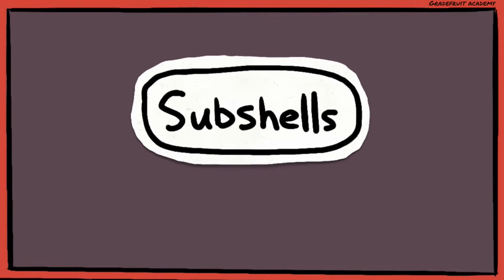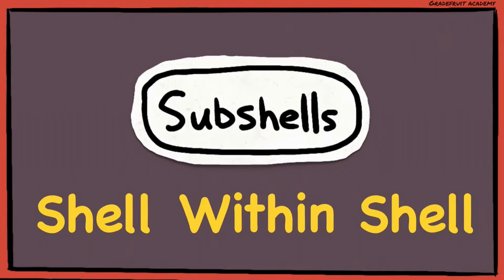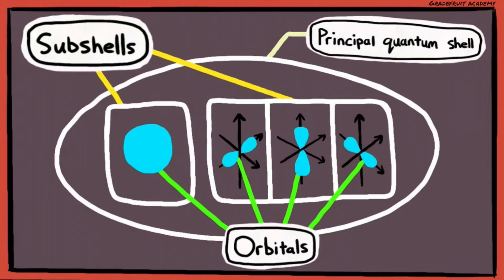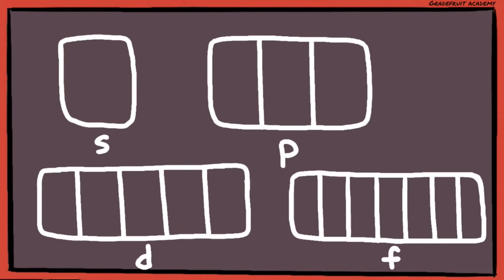And as the name suggests, subshells are shells within a shell. Or, we can see them as containers that contain orbitals. There are 4 types of subshells, the S, P, D, and F subshells.